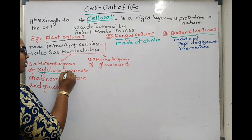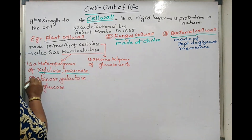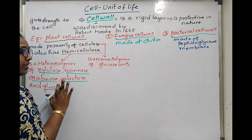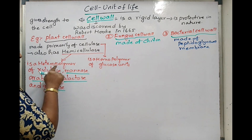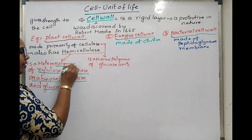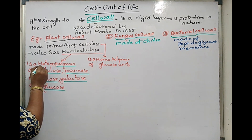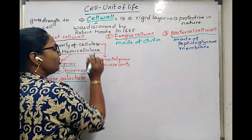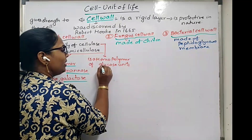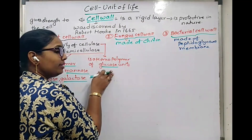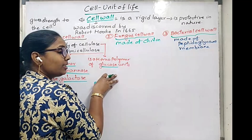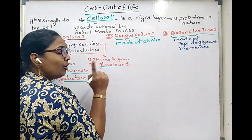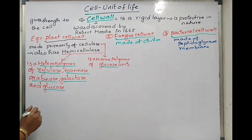In hemicellulose, we are using xylose, mannose, arabinose, galactose, and glucose — five types of units — to make one polymer, one big chain. So we use the term 'hetero,' which means different. But in the case of cellulose, only glucose units are used — nearly 6000 glucose units make one molecule of cellulose.